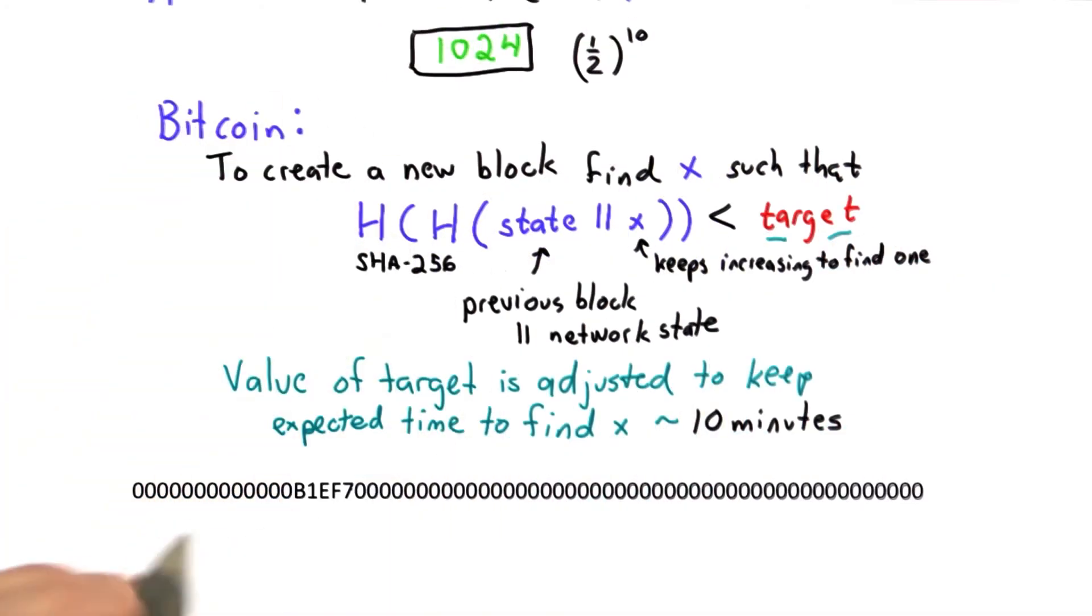And if you go to the Bitcoin website, you can see the current value of the target, which is this value. That in order to create a new block, you've got to find an x value such that this property is less than the target. And I should emphasize that these zeros are not just 1 bit - this is hex. So each one of these zeros is 4 bits. So you've got to find a value where the hash starts with 54 zeros.